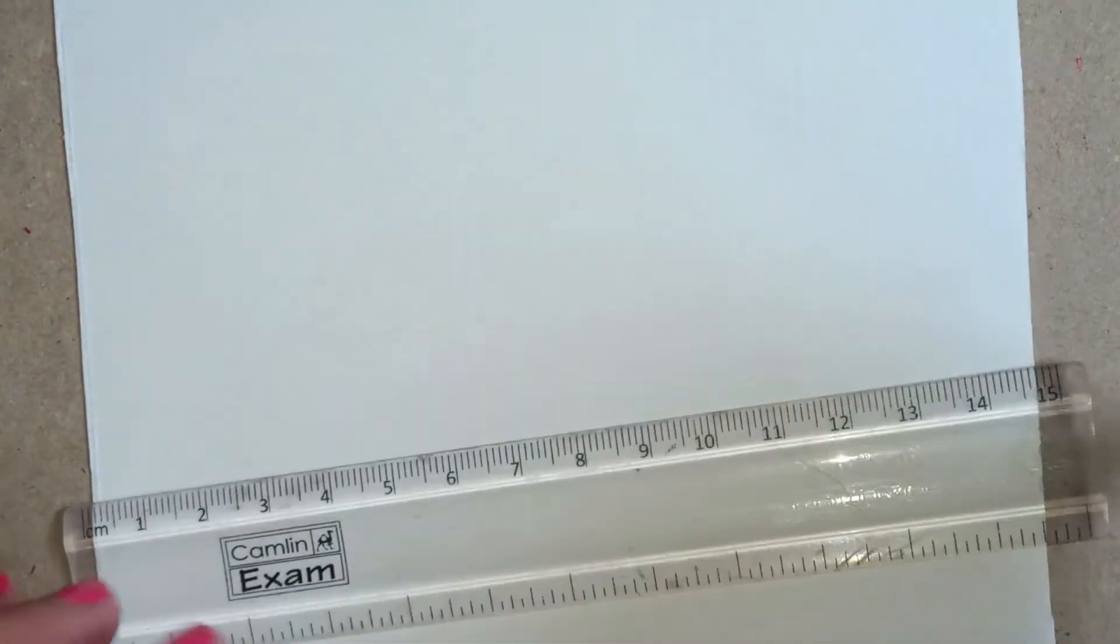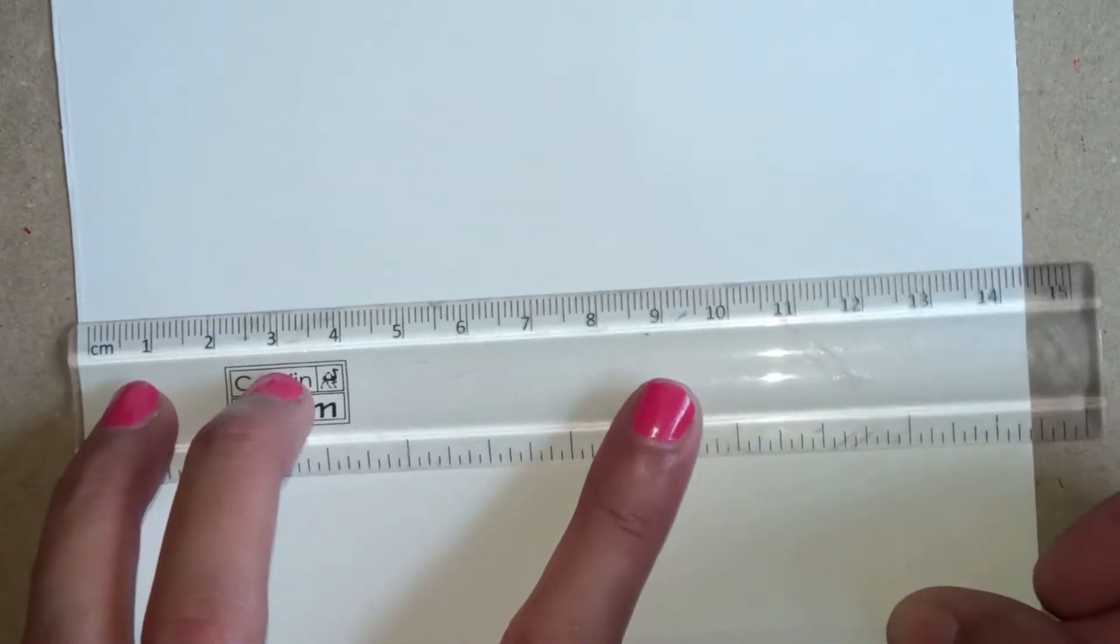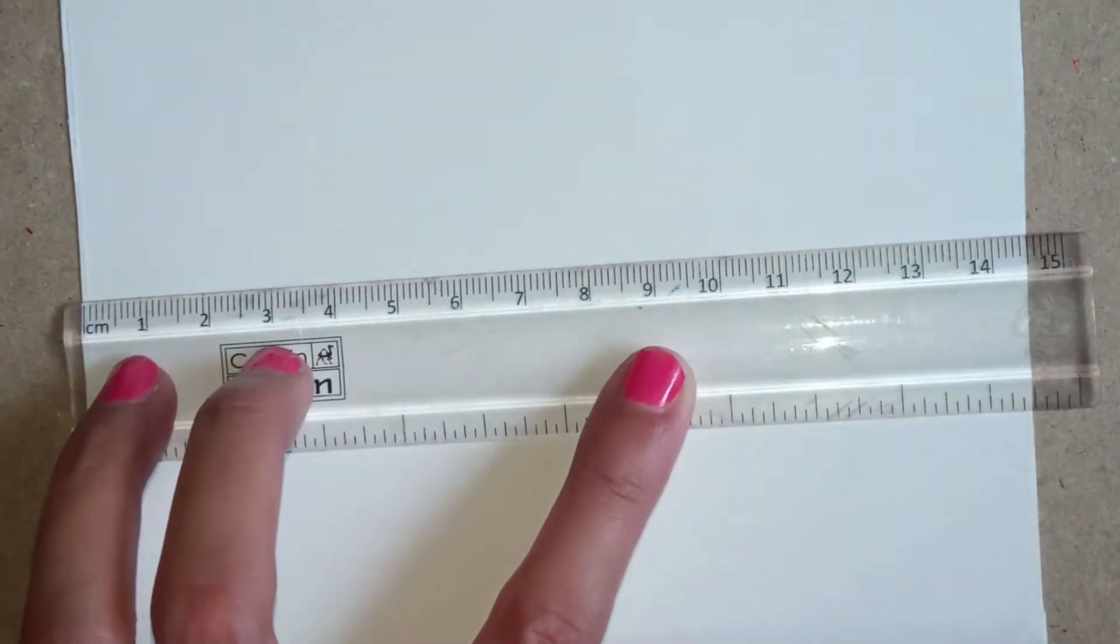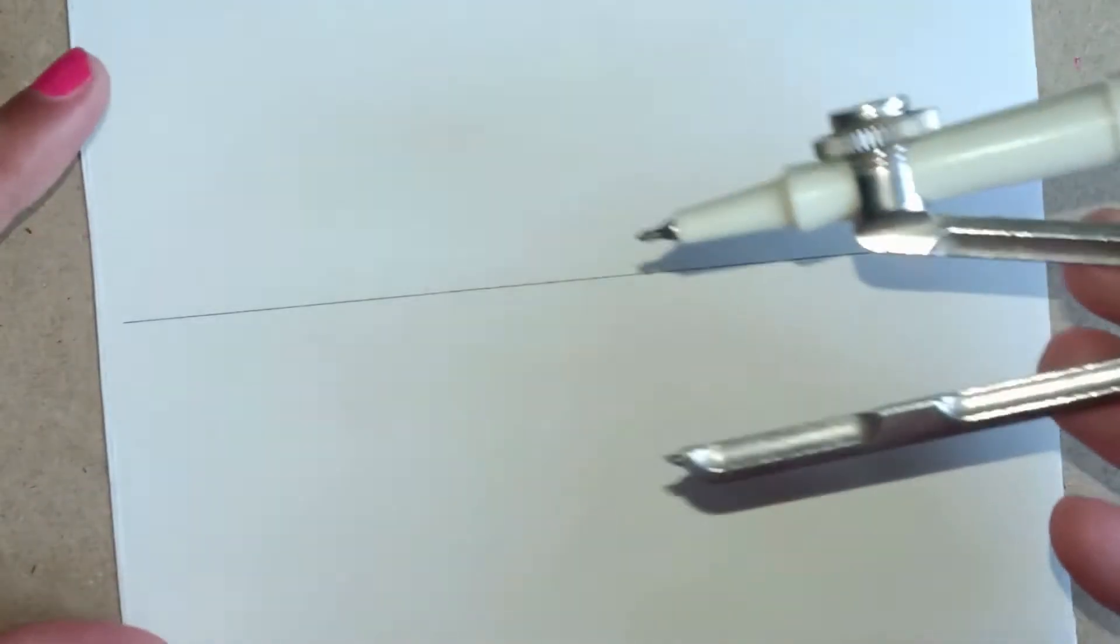Hello friends, today we will see how to draw an ellipse with the help of a compass. First, you have to draw a horizontal line of any length on a piece of paper. Take your compass and